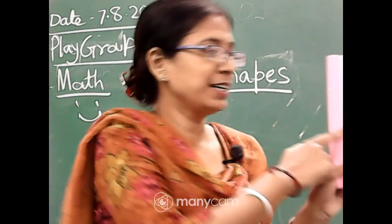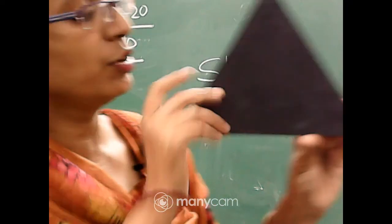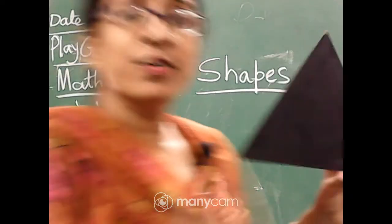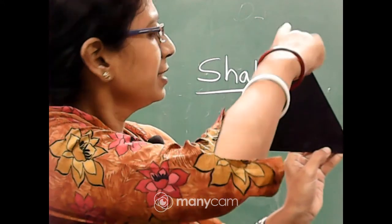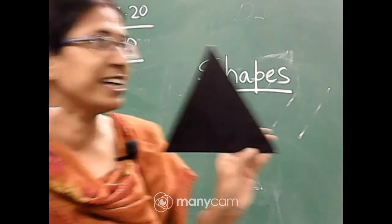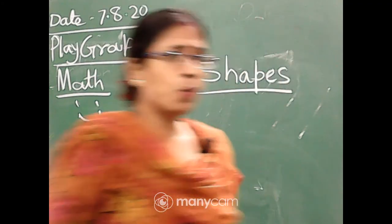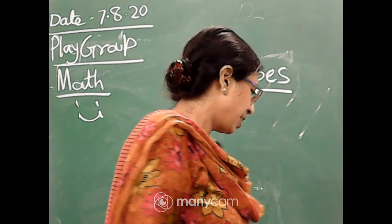Next, triangle. Look, this is a triangle. Count how many sides it has: one, two, three — three sides. A triangle has three sides. You ate pizza — one piece of pizza is triangle in shape.